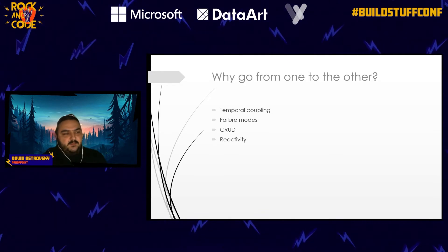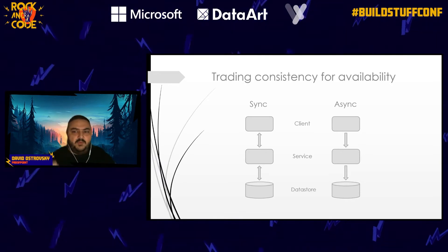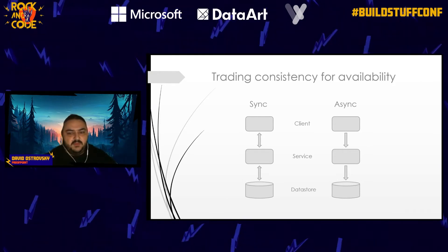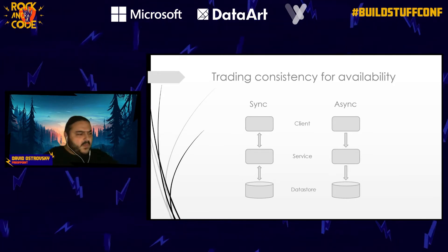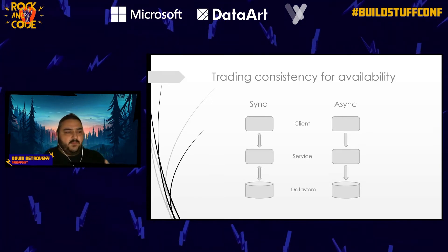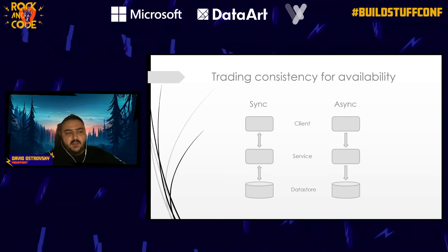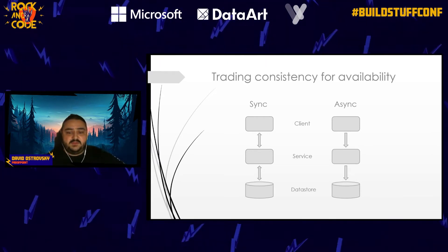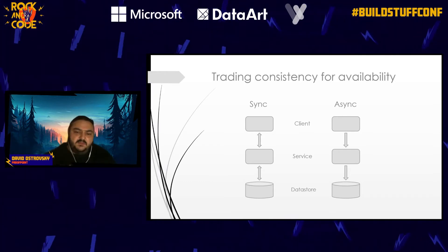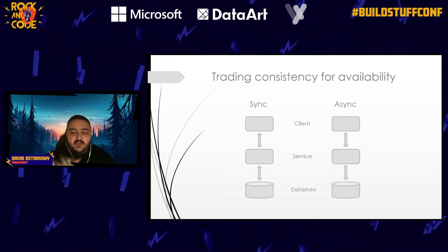Let's take a simple example comparing synchronous versus asynchronous service models. Imagine a client application — a web front end — which calls a backend service, and that service stores a record in a database. In the synchronous model, I press save on my web form, the web code calls the service, the service blocks and calls the database, waits until the database finishes, the database returns to the service, the service returns to the client — completely synchronous.